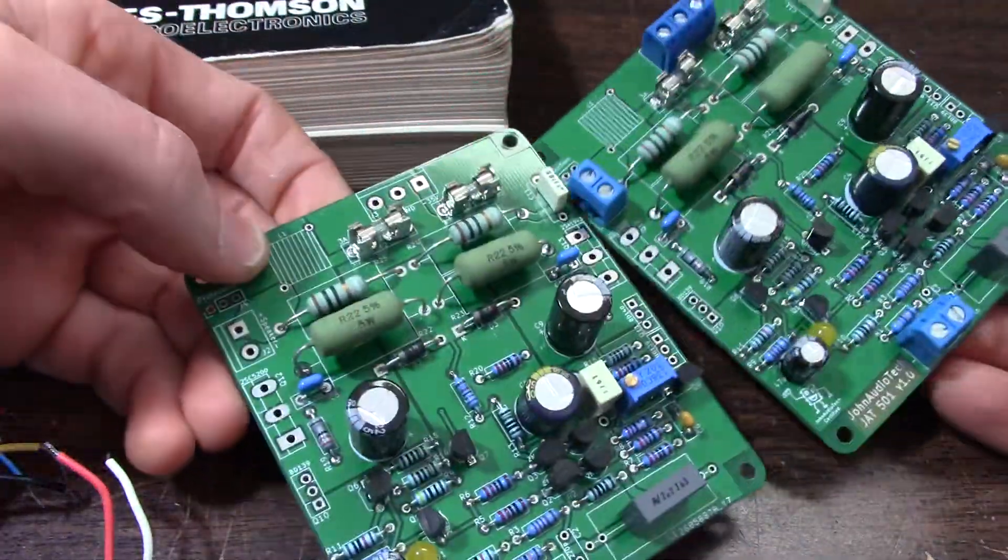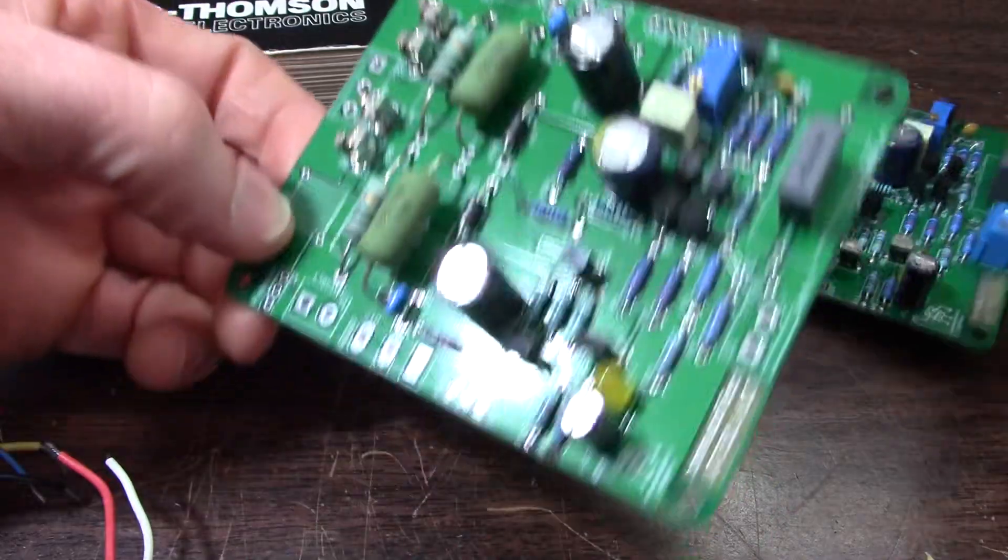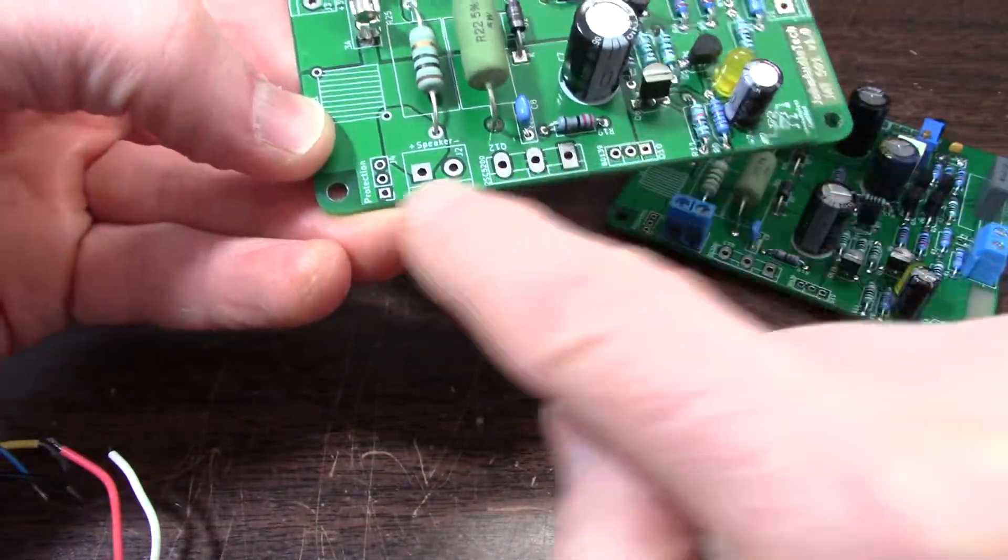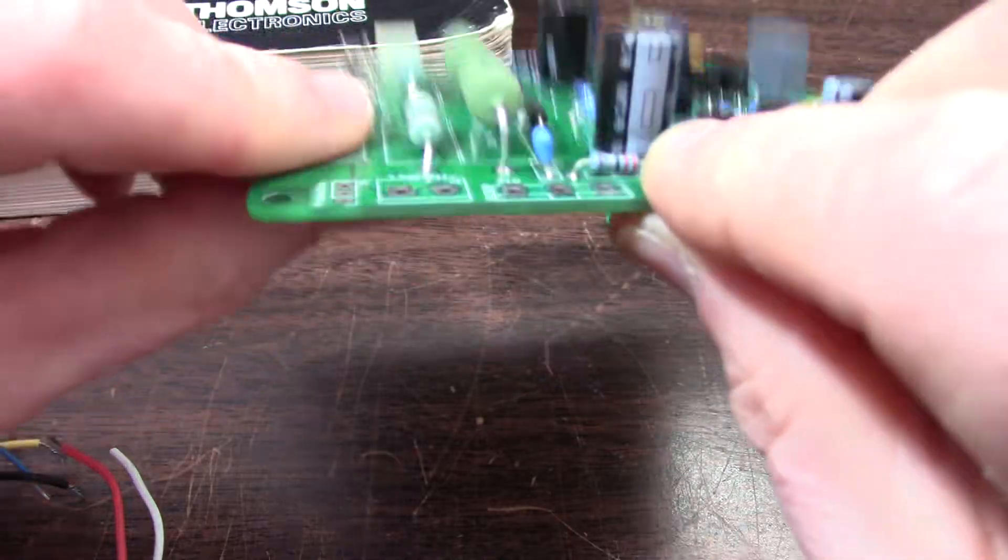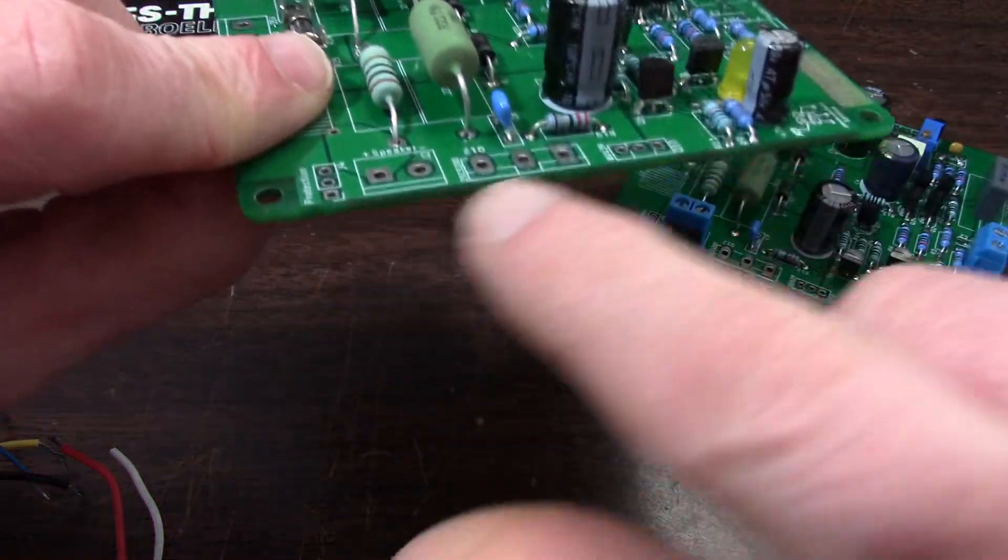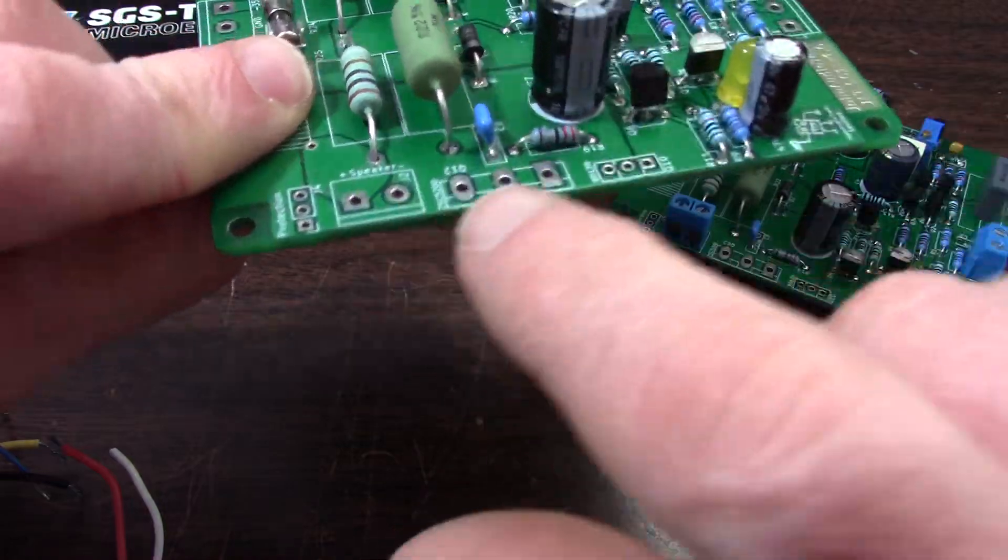Got all the components on except for the ones that will mount to the heat sink. I need to get some standoffs here and then I can get the proper distance and solder these components on.